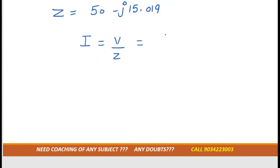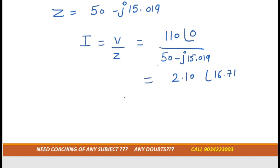For that we need current. Current is V by Z. V is 110, no angle is mentioned so we'll take 0. But Z is 50 minus j 15.019. This is in rectangular form so we need to convert it into polar form. After solving we'll get 2.10 angle 16.71.